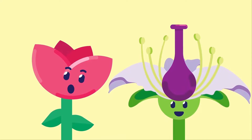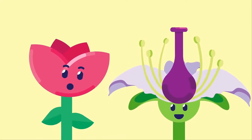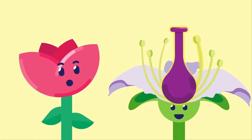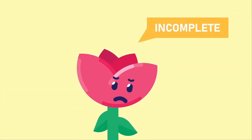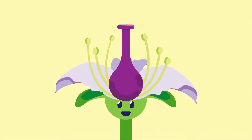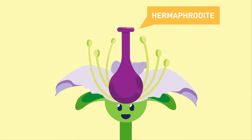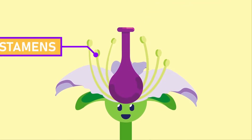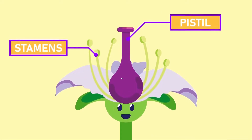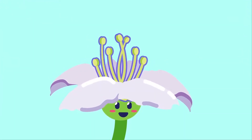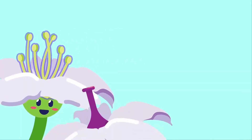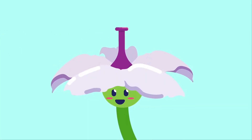Some flowers do not have all four whorls of floral parts — that is, sepals, petals, androecium, and gynoecium — so they are called incomplete flowers. Conversely, a complete flower, which can also be called a bisexual or hermaphrodite flower, has both the stamens and the pistil.